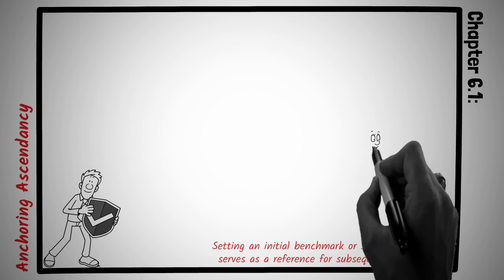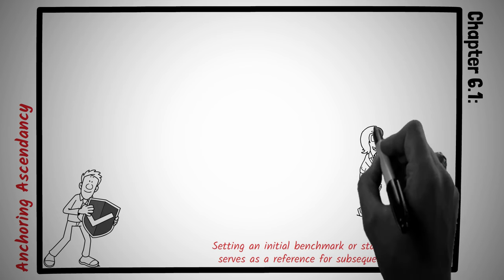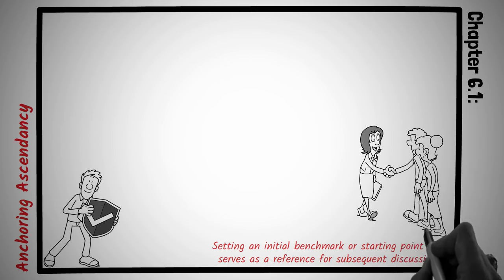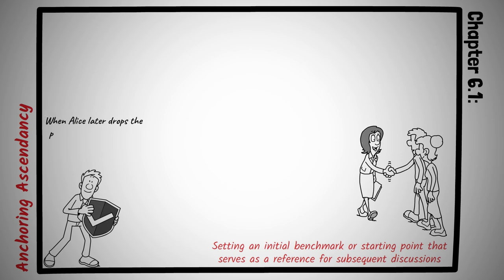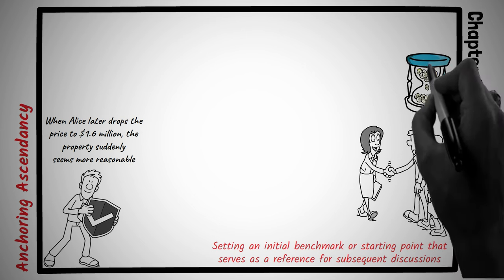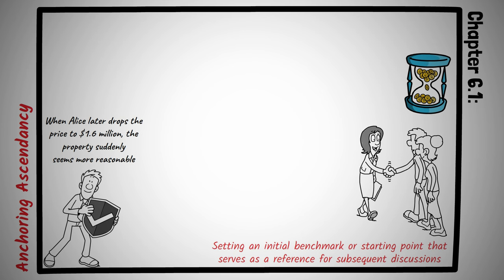Picture this. Alice is a real estate agent preparing to list a luxury penthouse in a posh neighborhood. Knowing the power of anchoring, she sets the initial price at a whopping $2 million. Perspective buyers are taken aback by the high price, but it sets a tone for the discussions that follow. When Alice later drops the price to $1.6 million, the property suddenly seems more reasonable, even if it's still on the higher side. Buyers feel like they're getting a deal in comparison to the initial price, and negotiations proceed with that anchor in mind.